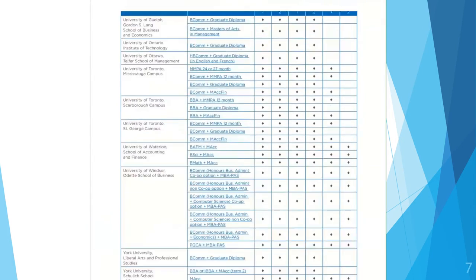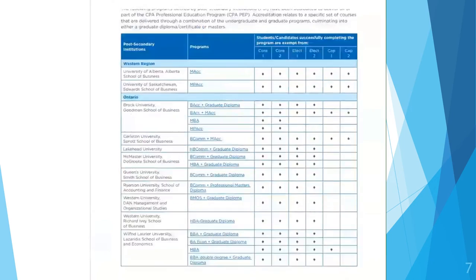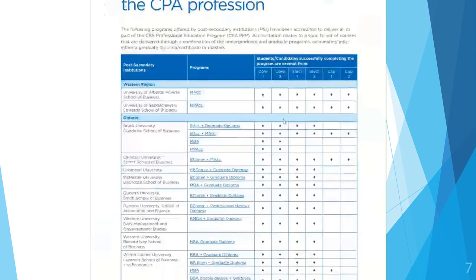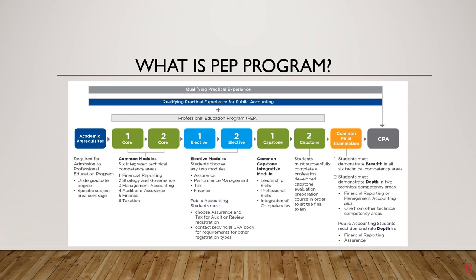For example, if you have completed Queen's University BCom and Graduate Diploma, you will be able to skip the two Core modules and two Electives, and jump straight to the Capstone 1 module. So now let's talk about what is the PEP program.